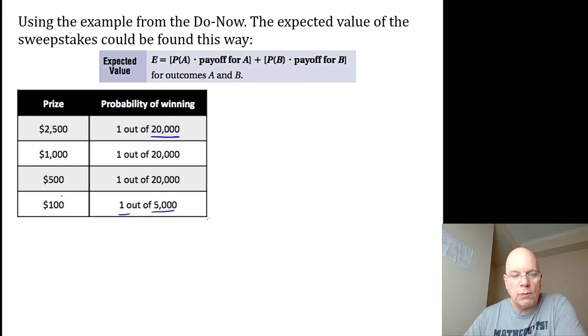When you see the 1 out of 5,000, that's sort of a tip-off that there is more than one $100 prize. There must be four $100 prizes because four out of 20,000 would equal 1 out of 5,000. This probability is better, higher, because there are multiple $100 prizes.